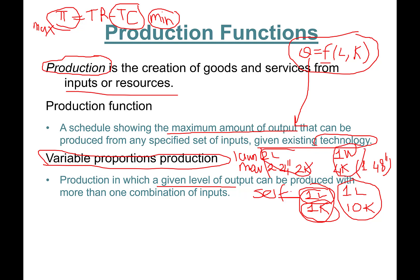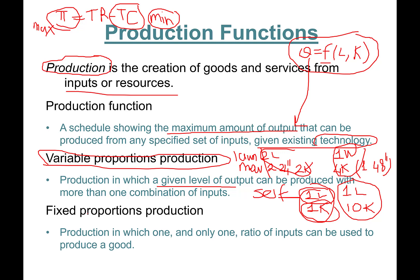Fixed proportions of production is quite rare in the real world. It's production in which one and only one ratio of inputs can be used to produce a good. An example is one professor in one classroom lecture. Imagine putting two professors in a classroom talking at the same time. If you're baking a cake, you need for instance two cups of flour, three eggs, one cup of sugar, one cup of chocolate chips. If you deviate from this recipe, it doesn't work.